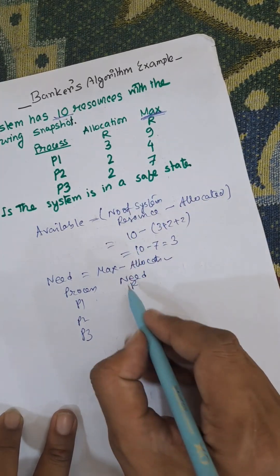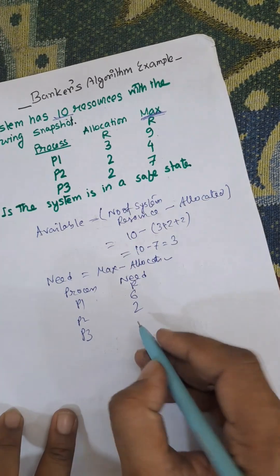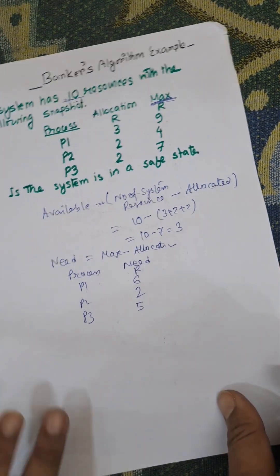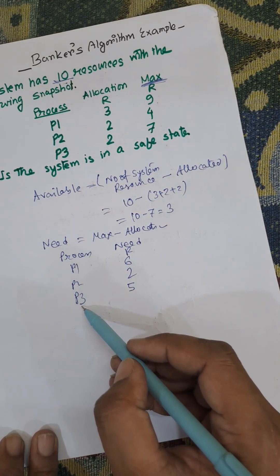6, 4 minus 2, 2, 7 minus 2, 5. So these are the need column for the process P1, P2, P3.